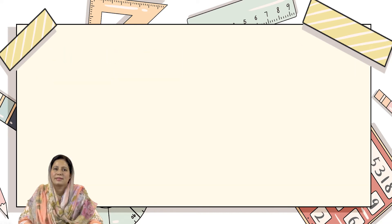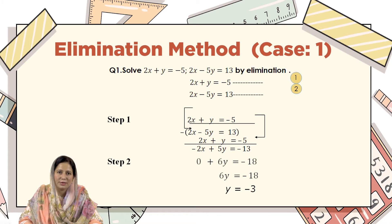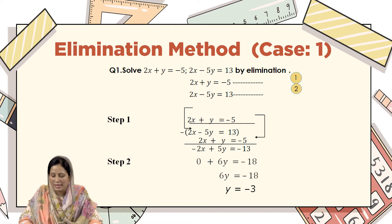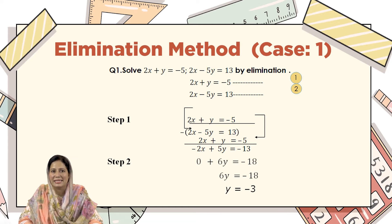Now we will discuss the method of solving simultaneous linear equations — Case 1. We are given two equations: the first is 2x plus y equals minus 5, and the second equation is 2x minus 5y equals 13. Elimination means we will eliminate or vanish one variable to get the value of the second variable. Looking at the equations, we can see that x has the same coefficient, so it is easy for us to eliminate x by subtracting.